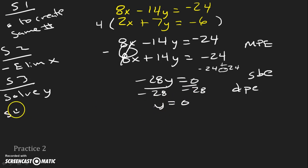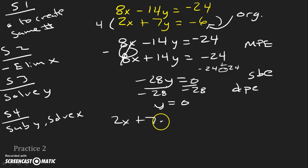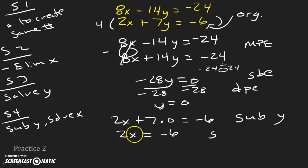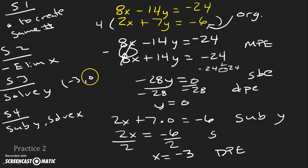Now step 4: substitute y and solve for x. Using the original equation before we multiplied, we get 2x plus 7 times 0 equals negative 6. We simplify to 2x equals negative 6, because 7 times 0 is 0. Dividing both sides by 2, we get x equals negative 3. Our final answer as a coordinate point is (−3, 0).